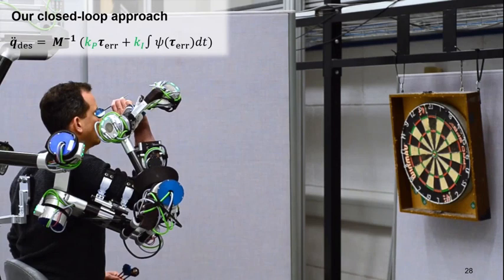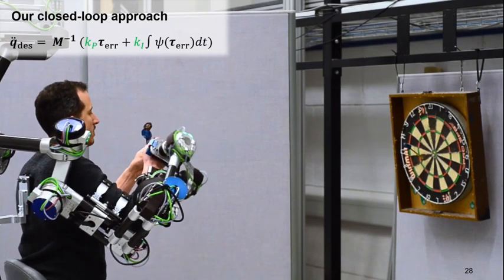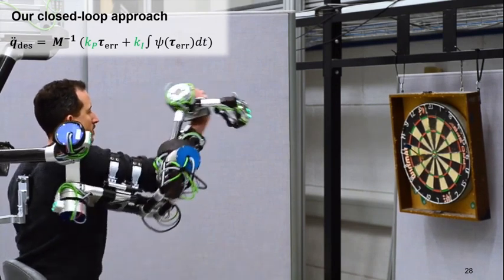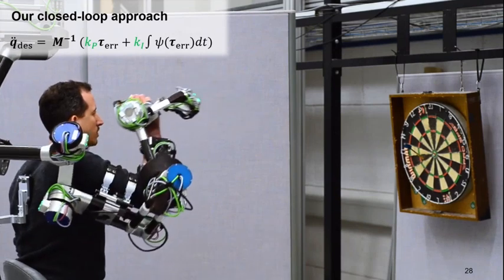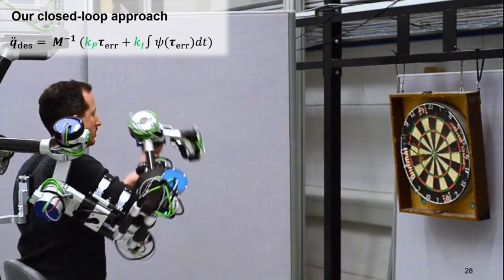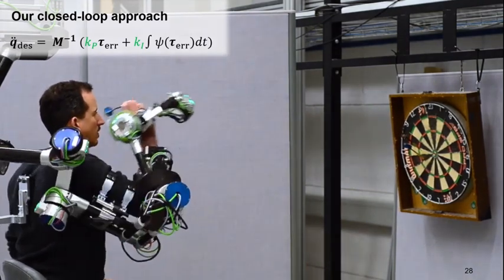Thereby we could achieve highly transparent behavior even in the presence of dynamic movements of the human. Here we demonstrate it by throwing darts. By the way, without the robot I'm not really much better at this.